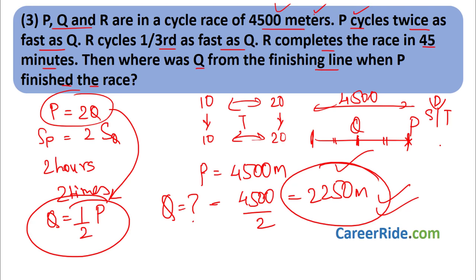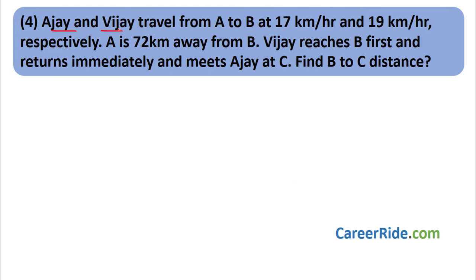Question 4: Ajay and Vijay travel from A to B at 17 km/h and 19 km/h respectively. A is 72 kilometers from B. Vijay reaches B first and returns immediately, meeting Ajay at point C. Find the distance B to C. For such problems, it helps to draw a line: A on the left, B on the right, with 72 km between them.